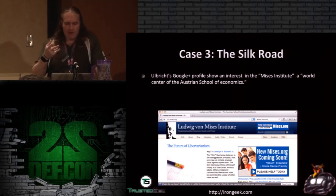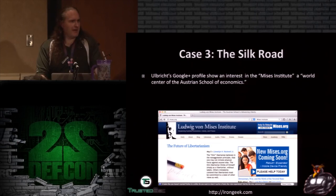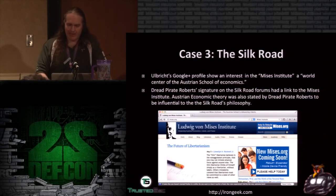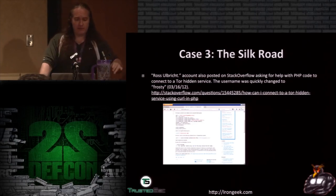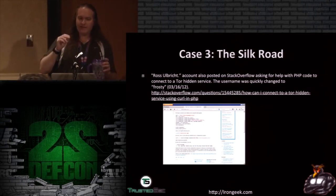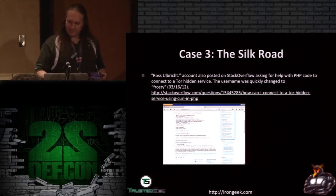A few other things: Dread Pirate Roberts posted a lot about his economic philosophy on Silk Road, and Ulbricht also had a strong interest in the Mises Institute and the Austrian School of Economics — similar interests, kind of like how Jeremy Hammond let loose too much of his personal life. Also, a 'Ross Ulbricht' account on Stack Overflow was asking for help with PHP code for connecting to a Tor hidden service. He quickly changed his username to 'Frosty,' but the first username he used was Ross Ulbricht.